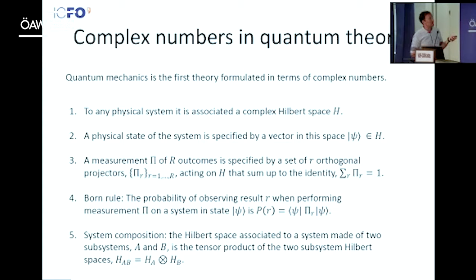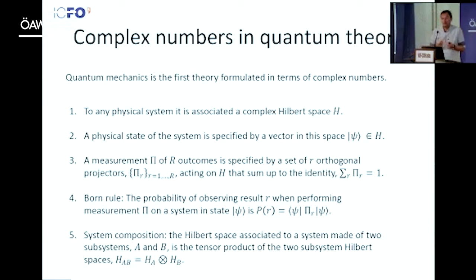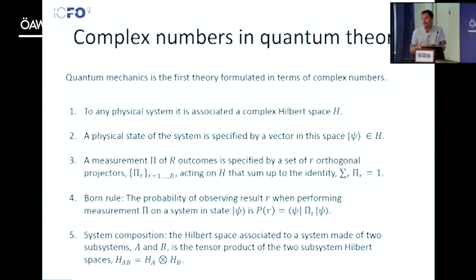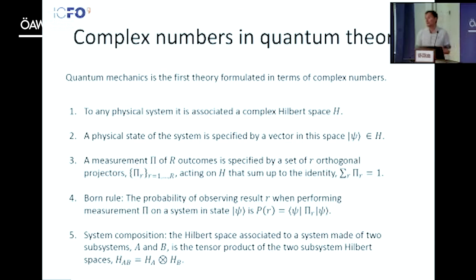If you open any textbook on quantum physics, these are the postulates you find: from the very beginning, you have complex Hilbert spaces. The state is specified by a vector in this space — you can also do it with mixed states. Measurements are given by orthogonal projectors, probabilities are computed through the Born rule, and you compose systems with a tensor product. I'm going to take these postulates as defining quantum theory, and I wonder whether I really need the complex numbers or if real numbers would suffice.